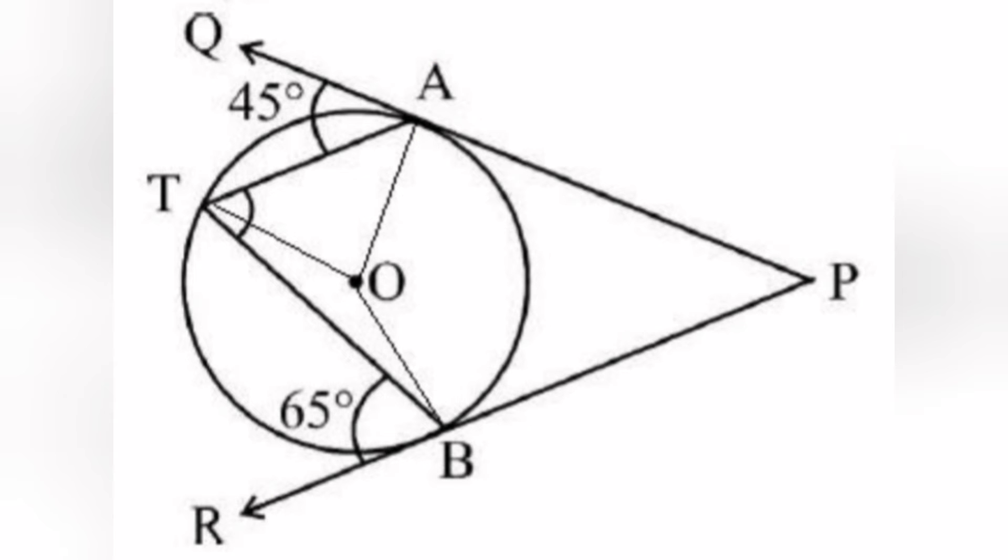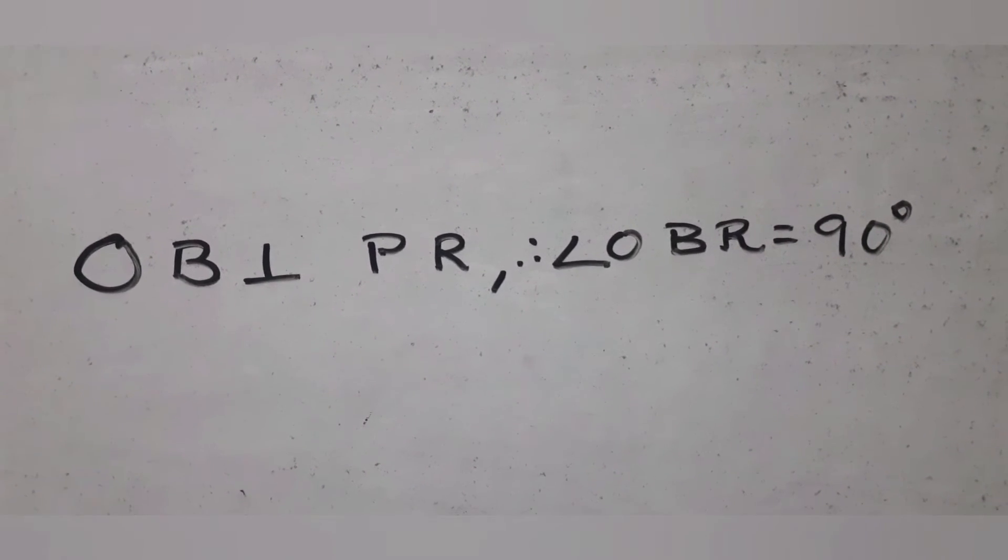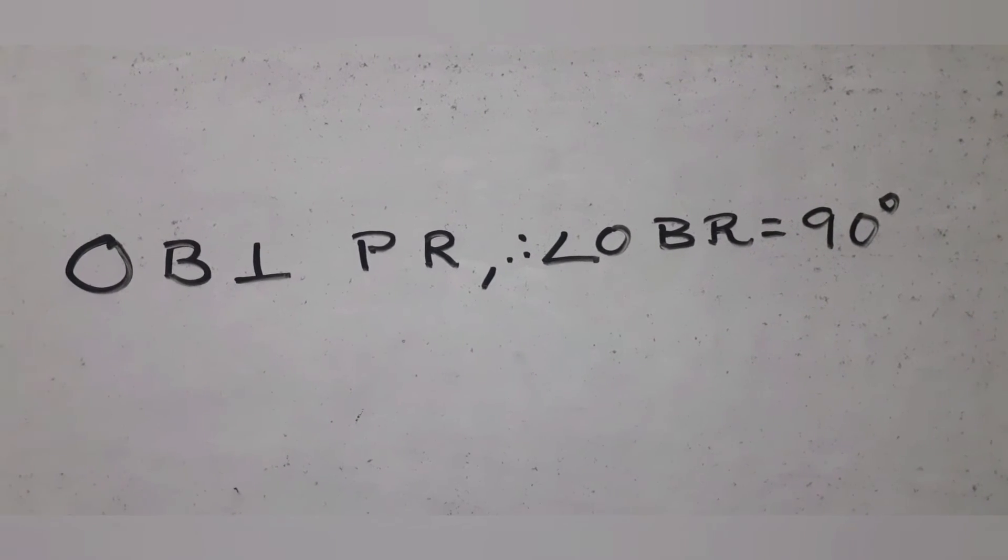We repeat a similar argument with triangle OTB. PR is the tangent at B and OB is the radius, so OB is perpendicular to PR. So angle OBR equals 90 degrees.